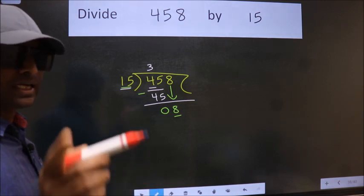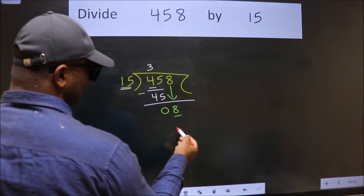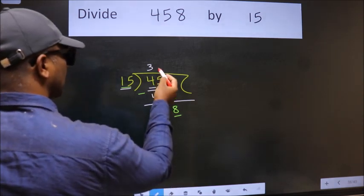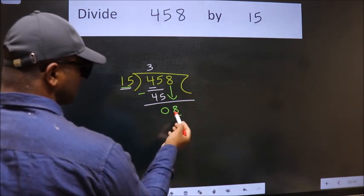Instead of that, what we should think of doing is which number should we take here. If I take 1, we get 15. But 15 is larger than 8.